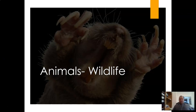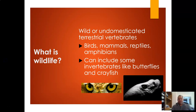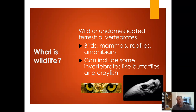The easiest one to start with is the animals themselves — the wildlife. Wildlife is defined as undomesticated terrestrial vertebrates. That's what we're talking about: birds, mammals, reptiles, amphibians. You can include invertebrates, but really wildlife focuses much more on undomesticated terrestrial vertebrates.